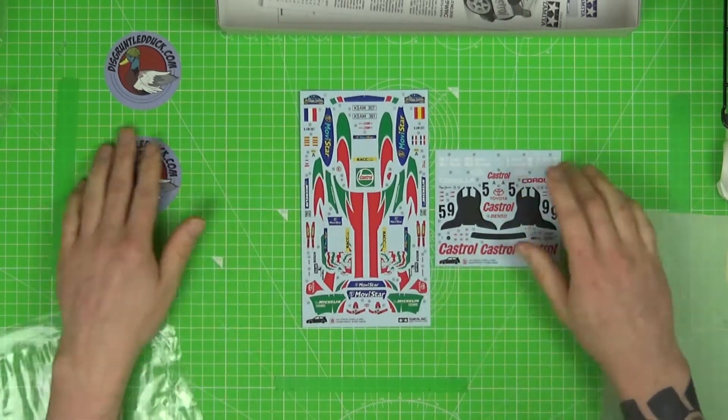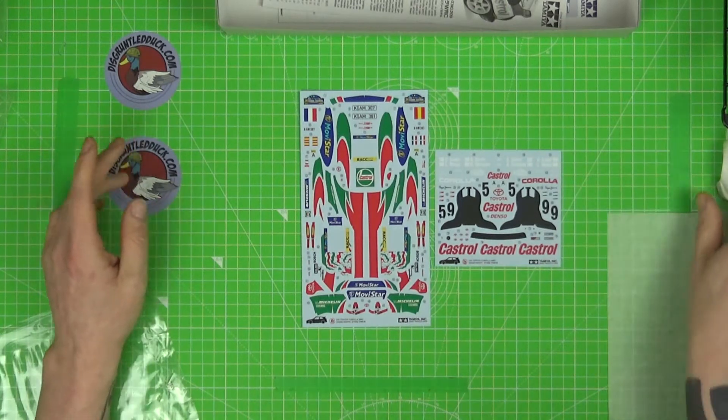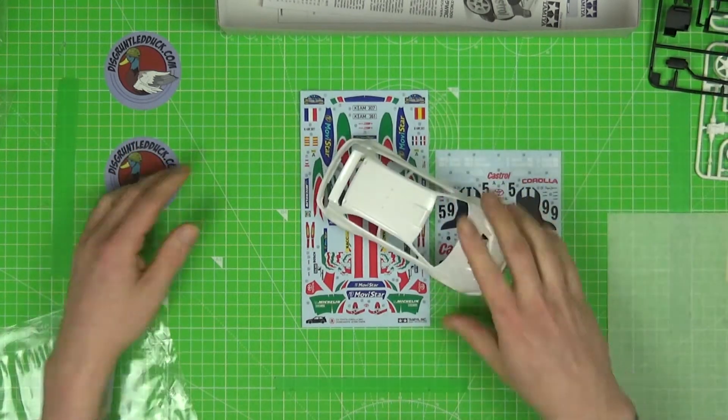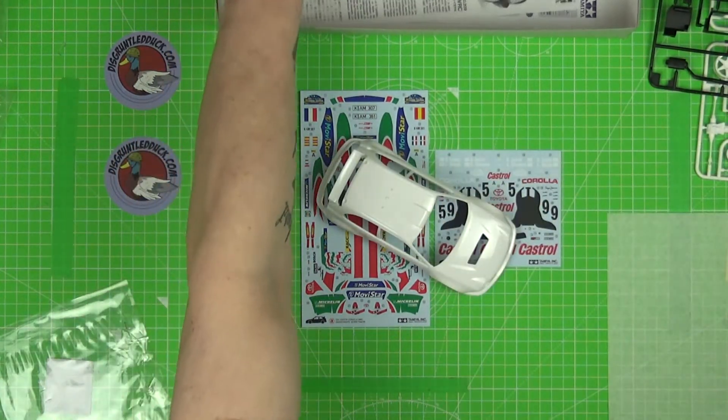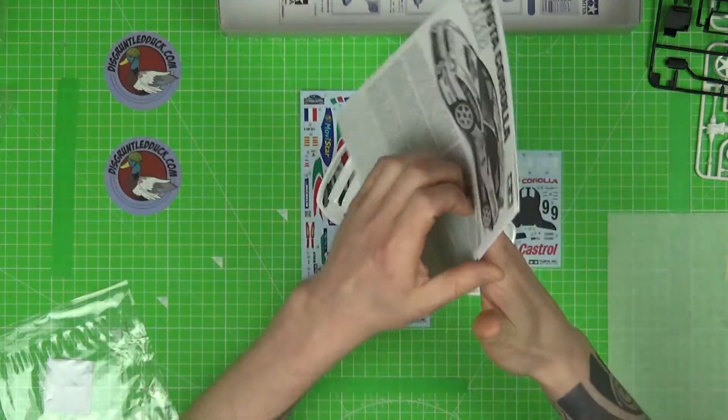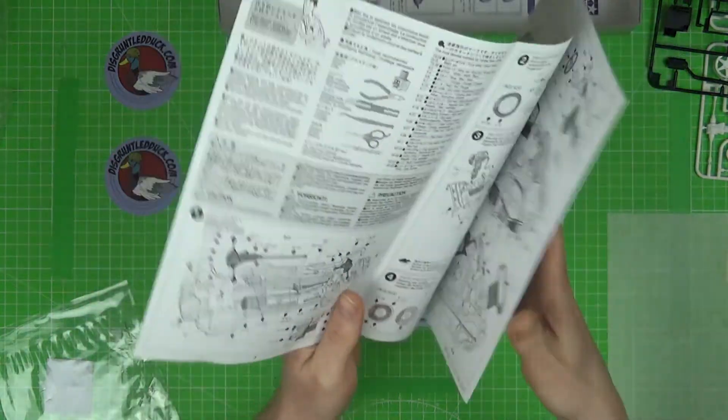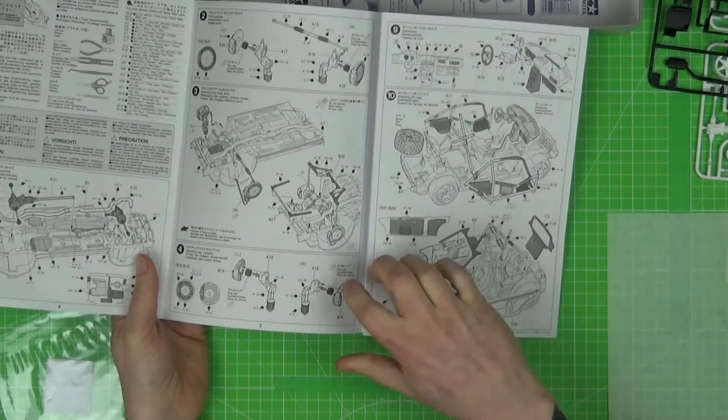So basically that's what's in the box of the Toyota Corolla. There's the body, a bit of decals. As always, a Tamiya kit, so you know you can have some really simple instructions to work through.